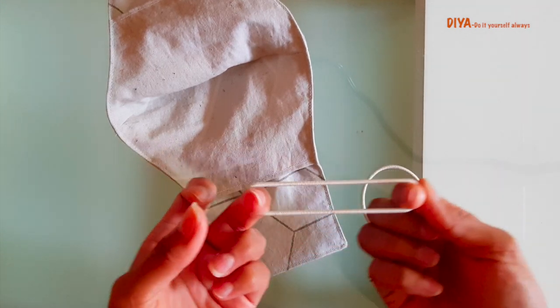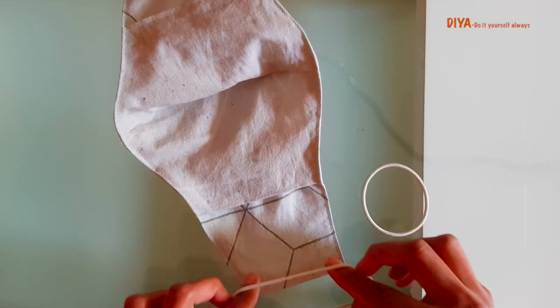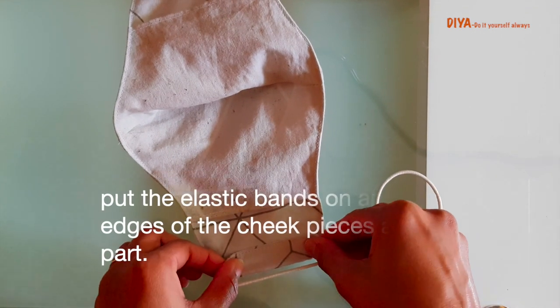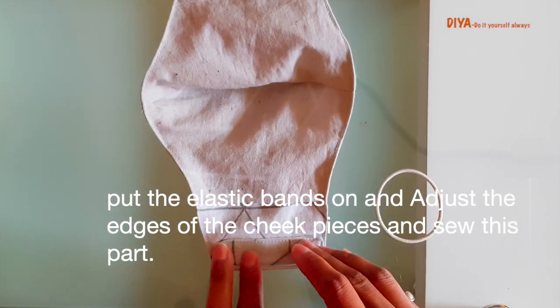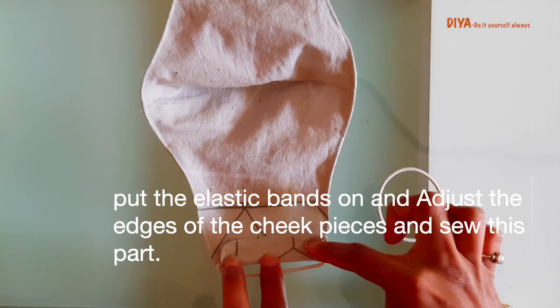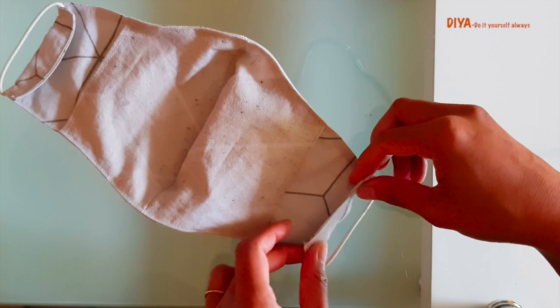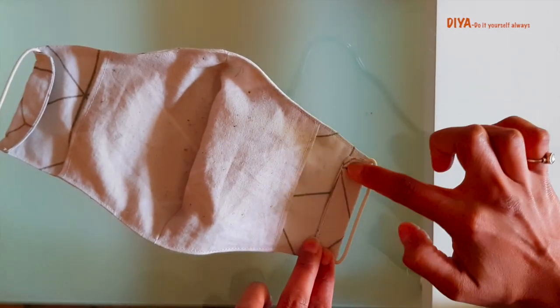The next thing is to attach the elastic bands. For this you need two elastic bands. I'm using these two hair bands. You can put on the mask and check which place you need to attach the elastic bands. Put the elastic bands on and adjust the edges of the cheek pieces, and then sew this part.